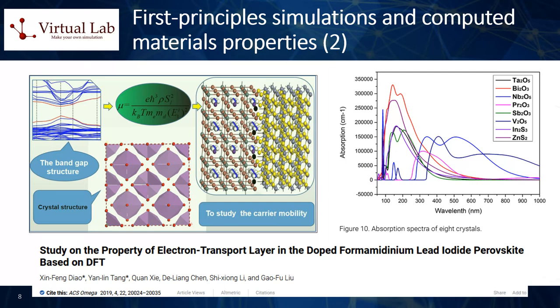Three: charge carrier mobility. The mobility of charge carriers — electrons and holes — affects the efficiency of a photovoltaic material by dictating how quickly and easily these particles can move through the material, thus influencing the electric current. Four: defect levels and density. Defects can significantly influence the performance of a photovoltaic material. Depending on the nature and location of the defect, it can act as a recombination center for electron-hole pairs, reducing the efficiency of the device. Therefore, calculating defect levels and densities can provide insights into the expected performance of the material.